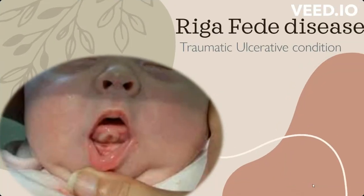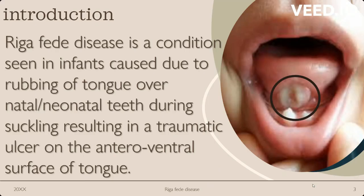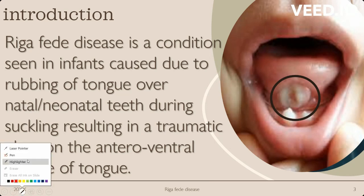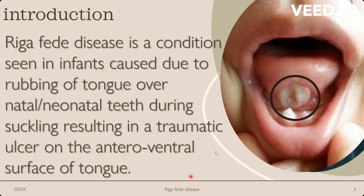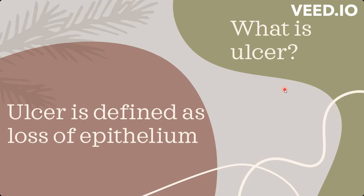Today's topic is Riga-Fede disease. It is a traumatic ulcerative condition seen in infants, caused due to rubbing of the tongue over the natal or neonatal teeth during suckling, resulting in a traumatic ulcer on the anterior region on the ventral surface of the tongue.